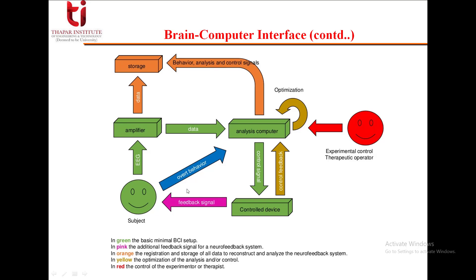The feedback signal shown here is additional for a neurofeedback system. We also have storage elements, mainly for the registration and storage of all data to reconstruct and analyze the neurofeedback system. There is also control feedback and optimization. If therapeutic, operator, or experimental control is required, an external operator can be used.